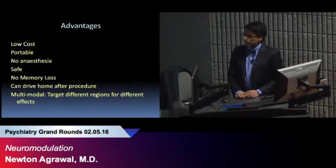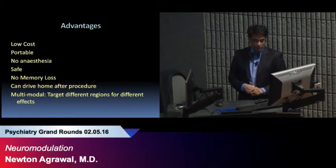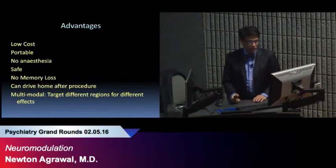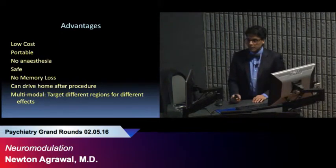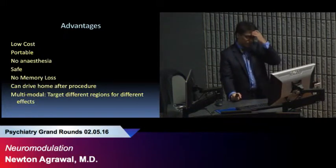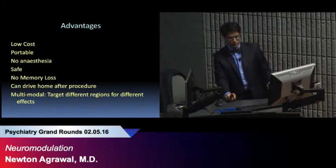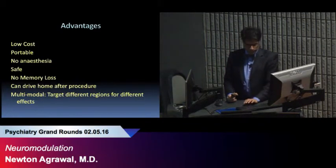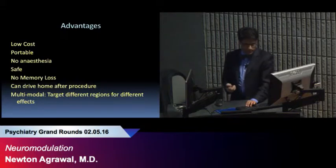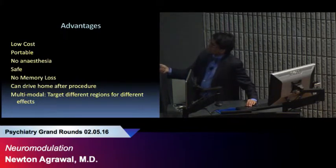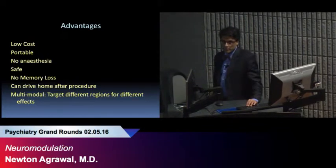Here's an example of that particular one unit. So the advantages of neurostimulation through TDCS is that it's relatively low cost, we're talking about 30 bucks. These devices are portable, you can take them anywhere. So if you're treating rehabilitation from stroke or aphasia, you can have it on the go. Furthermore, they're safe, there's no memory loss like there is in ECT, and you can drive home.